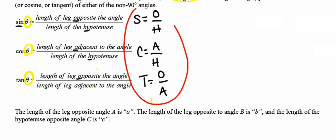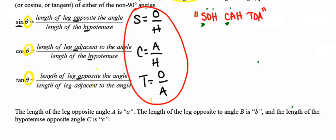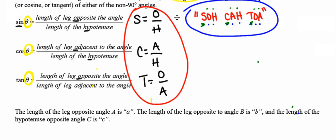You need to have those three trig ratios memorized. A mnemonic that has helped students in the past is SOHCAHTOA — this is the way I learned it. Sine is equal to the opposite side over the hypotenuse. Cosine is equal to the adjacent side over the hypotenuse. Tangent is equal to the opposite side over the adjacent side. Another mnemonic: 'some old horse caught another horse taking oats away.' Whatever it takes for you to memorize it, you have to have those three trig ratios committed to memory.